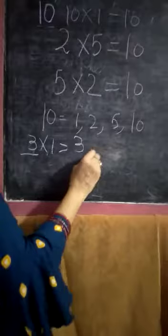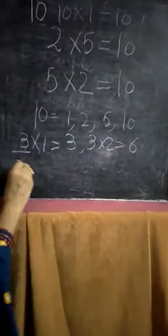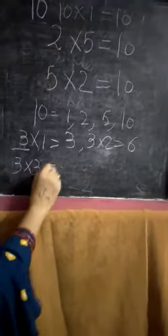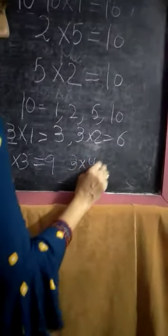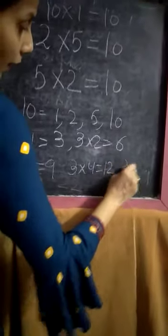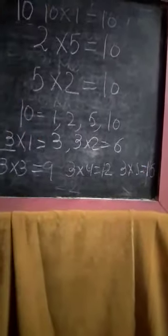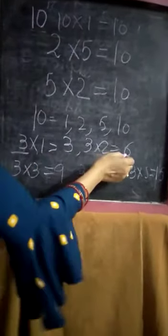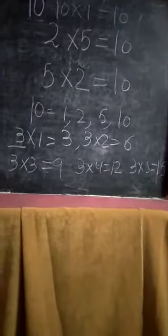3 ones are 3, 3 twos are 6, 3 threes are 9, 3 fours are 12, and 3 fives are 15. The multiples of 3 are 3, 6, 9, 12, and 15.